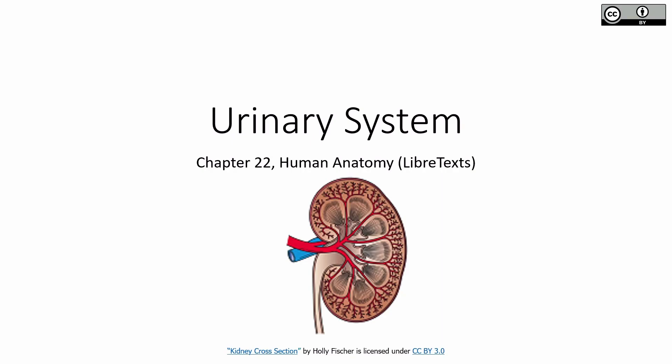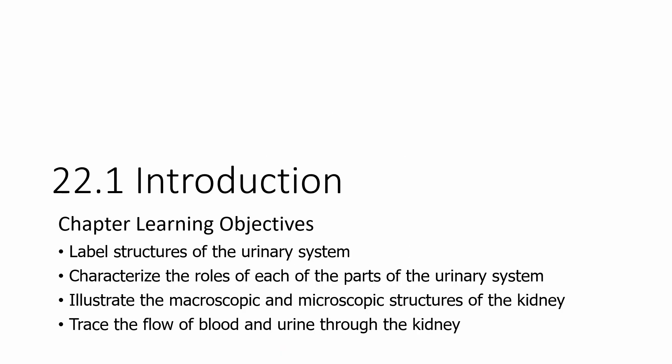We're starting our second to last chapter, and honestly one of my favorites, which is the urinary system. We're going to talk about the structure of the urinary system, the parts each structure plays, and we'll look at both the macroscopic large-scale and microscopic sides of the kidney. Then we'll talk about how blood and urine flow through the kidney.